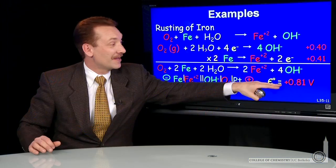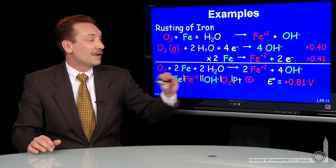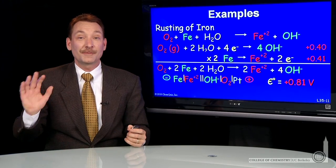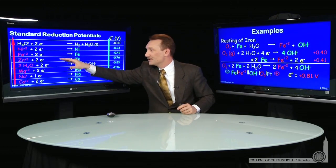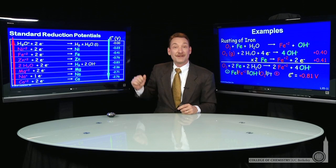Now I notice something interesting. The cell potential for the oxidation of iron is 0.81 volts. If I look back at my table of reduction potentials, I can see that if it were zinc or magnesium being oxidized, the potential would be even greater. These are farther down the table.